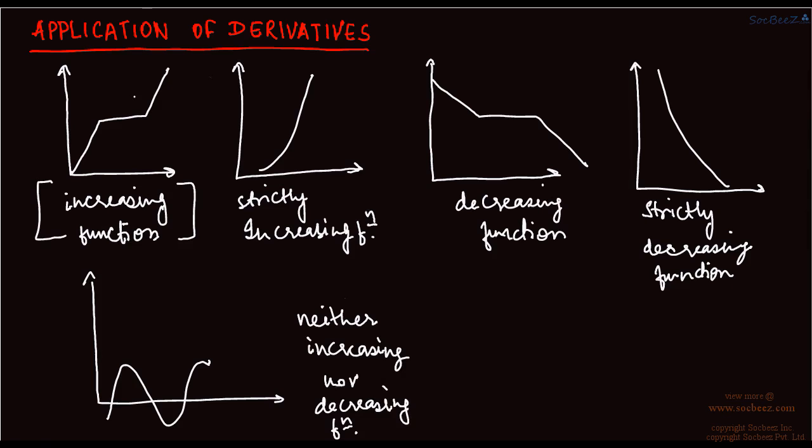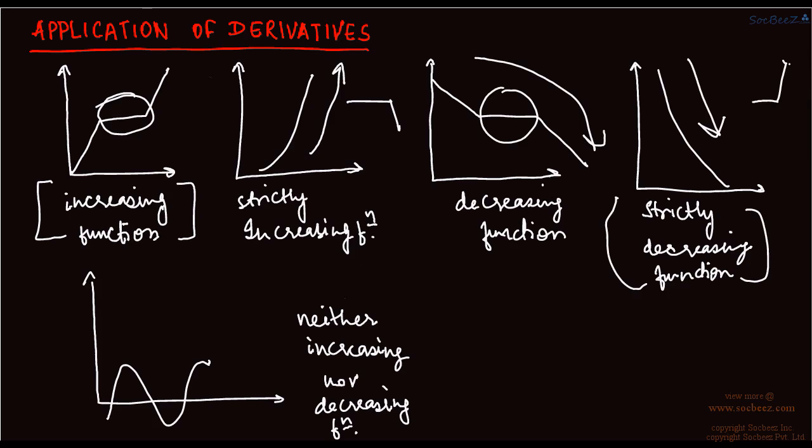In the increasing function, you can see that it is constant for some time. In the strictly increasing function, you can see it is always increasing, neither constant nor decreasing. In the decreasing function, it is constant for some time but decreasing for the other time. In the strictly decreasing function, it is always decreasing, neither constant nor increasing.